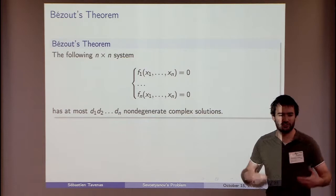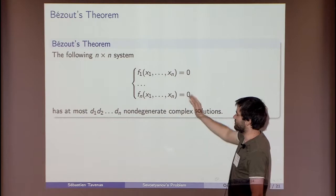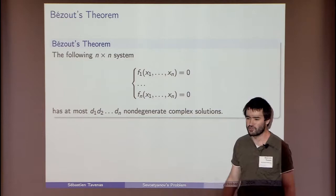That was for one polynomial. What happens now if we consider a system of polynomials? In the complex case, if we have a system of n equations in n variables, and the system is non-degenerate, there is Bezout's theorem, so that the number of complex solutions will be at most the product of the degrees.